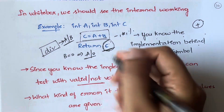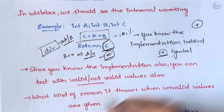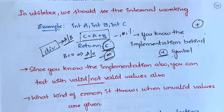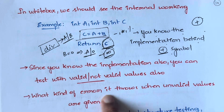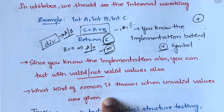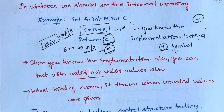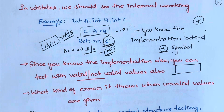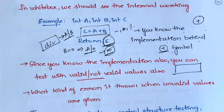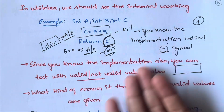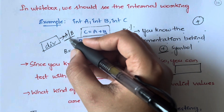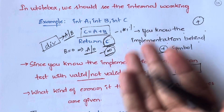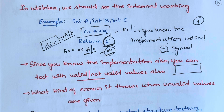Since you know the logic says a divided by b, you will test by setting b equal to 0. Division by 0 is undefined, so you should get an error message like 'zero is not allowed in denominator' or 'it is undefined' or 'infinity.' Instead, if the website simply closes the browser or behaves unexpectedly, that's not correct — it must clearly display the error message to the user.